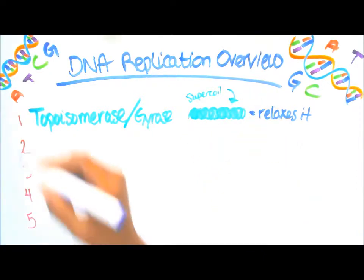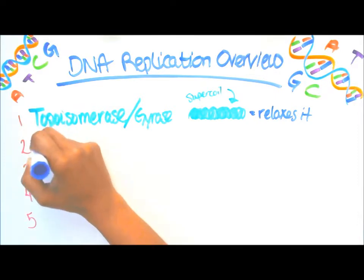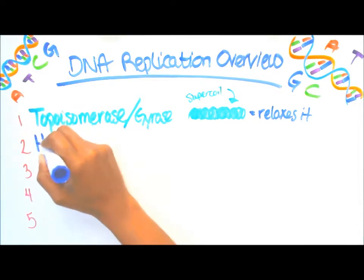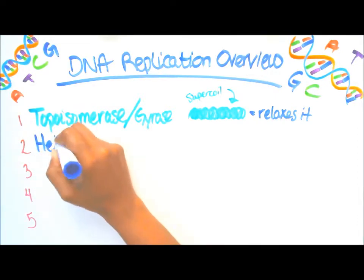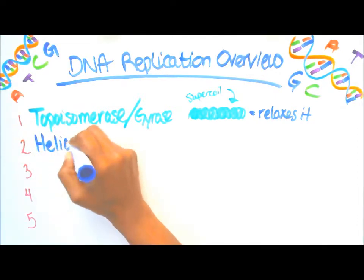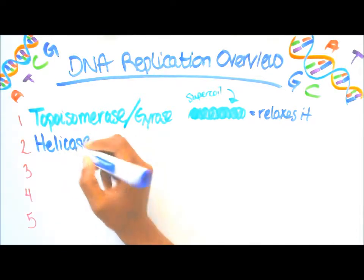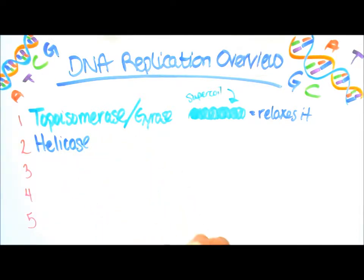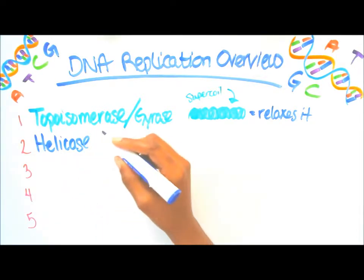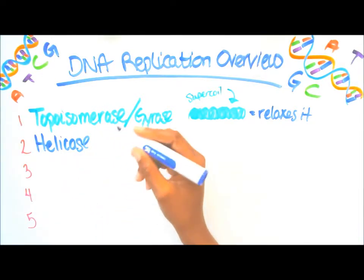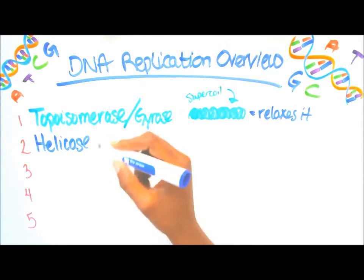Next we have helicase. Here's our supercoil double helix and what helicase does is it unwinds and separates the two strands of the double helix.